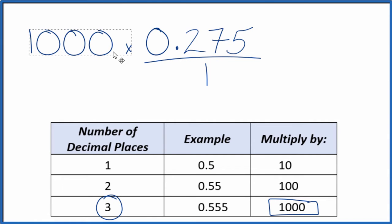So when I do that, 1,000 times 0.275, that will give me a whole number. 1,000 times 0.275 is 275. So now we have a whole number.